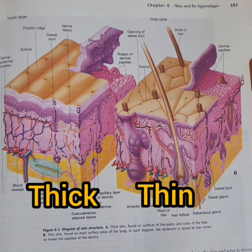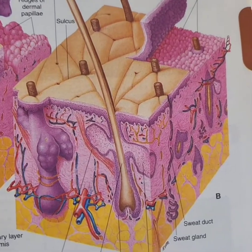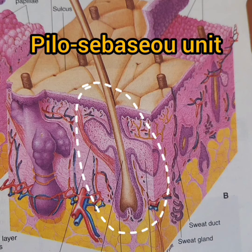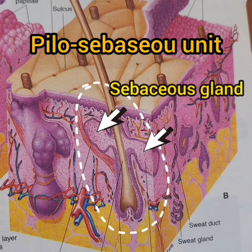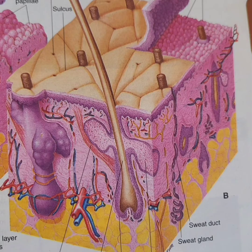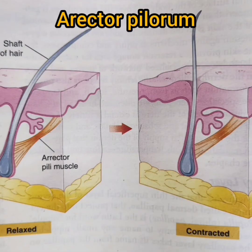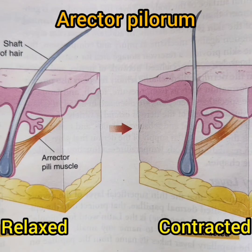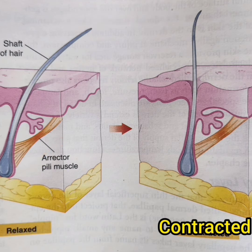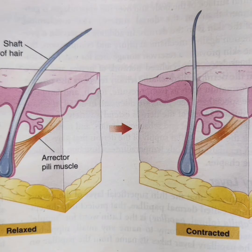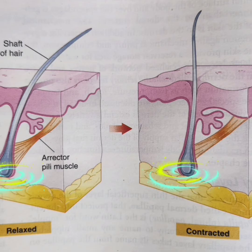Thin skin covers the whole body except the palm and sole. It shows the pilosebaceous unit, made up of the hair follicle, erector pili muscle, and sebaceous gland. The sebaceous gland is a holocrine gland that produces oily sebum. Small ducts release the secretion into the dermis by the side of the hair shaft, and sebum reaches the skin surface that way. Oil and dead keratin together make a perfect waterproof layer. The erector pili muscle can pull the hair follicle and is responsible for goosebumps. The slightest movement of air around the body is sensed by movement of hair and by the rich nerve supply at the base of the hair follicle.